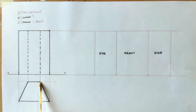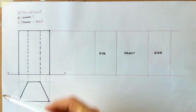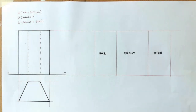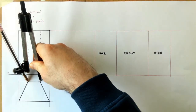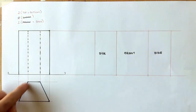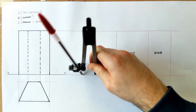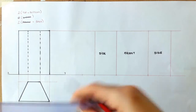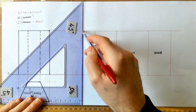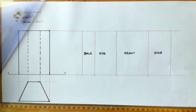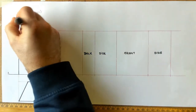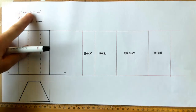With front and both sides done, all that remains of the vertical faces is the back. The back face can connect to either side — I'll attach it to the left side. The back measures 25mm wide, so I take that true length, mark it out from the left side, project it up, and that gives me the back surface.